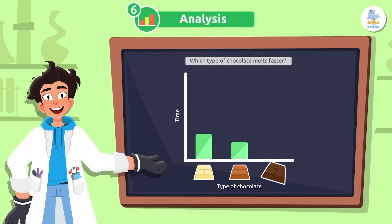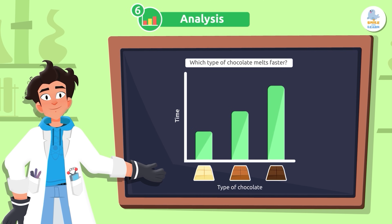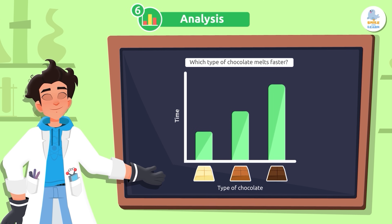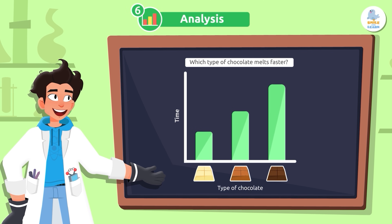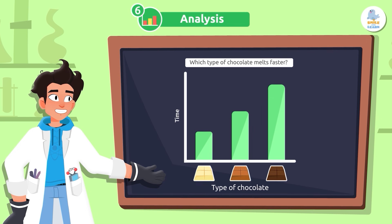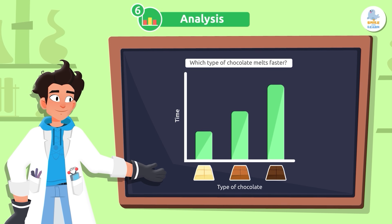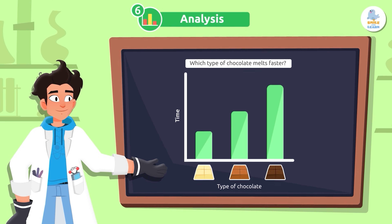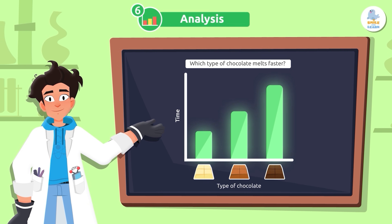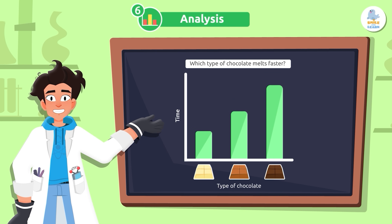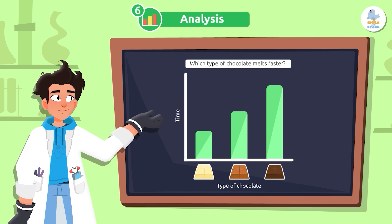Let's analyze the data. We can compare the time it took for each type of chocolate to melt and represent it visually on a bar graph. Graphs visually represent our data. Was our hypothesis correct?